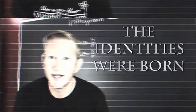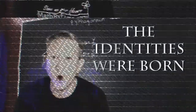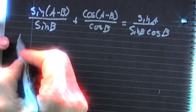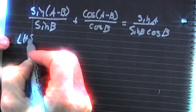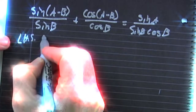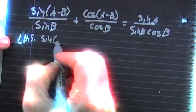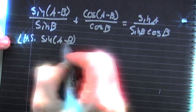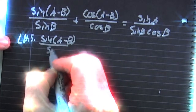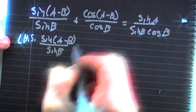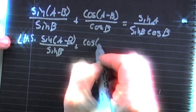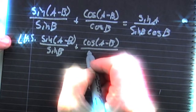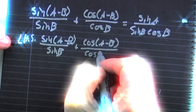And this is where the identities were born. So we're trying to prove that the sine of the difference of angles divided by the sine of B, plus the cosine of the difference of angles divided by the cosine of B, is going to be the sine of A divided by the sine of B cosine of B.